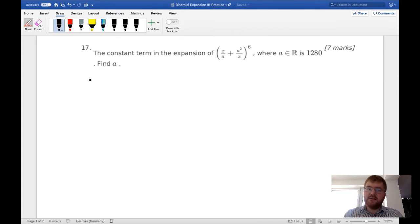So we're taking this question here, 7 mark question, the constant term in the expansion of (x/a + a²/x)⁶, where a is a real number is 1280, and we need to find a.